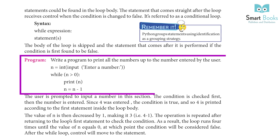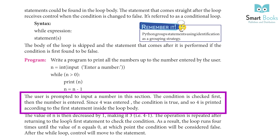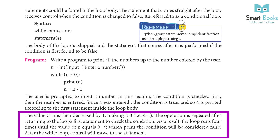Program — write a program to print all numbers up to the number entered by the user: n = input('Enter a number'). While n > 0: print(n). n = n - 1. The user is prompted to input a number. Since 4 was entered, the condition is true, so 4 is printed. The value of n is then decreased by 1, making it 3 (4 - 1). The operation repeats, checking the condition each time, and the loop runs four times until n equals 0, at which point the condition is false.